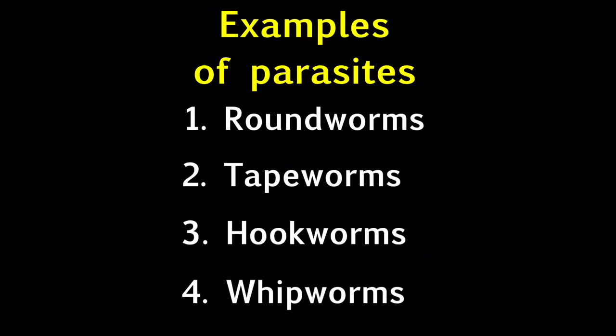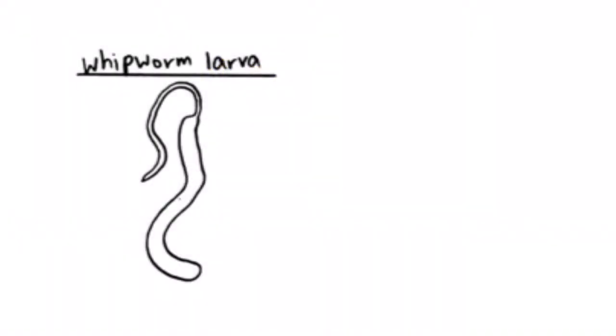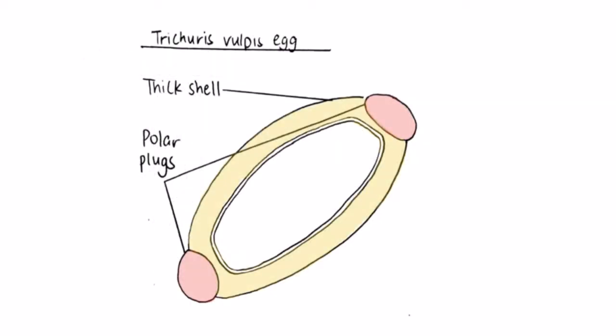Fourthly, for whipworms, this is the structure of its larva. Whipworms are also known as Trichuris vulpis and they are commonly found in dogs. Its eggs are ovoid-shaped with thick sidewalls. One special feature that makes this egg easy to identify is its polar plugs at the two ends of the egg.